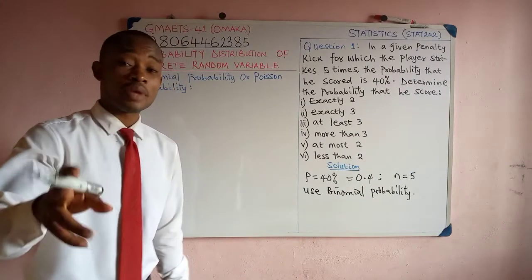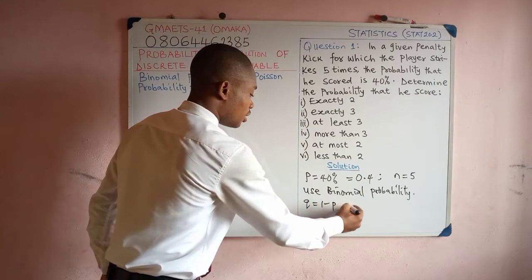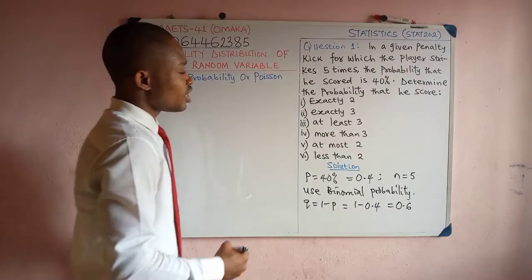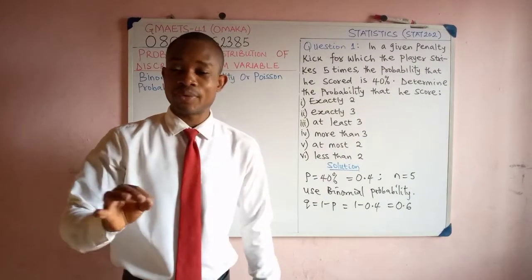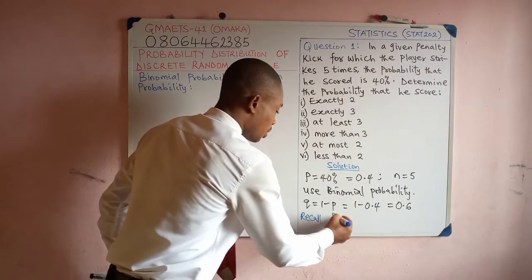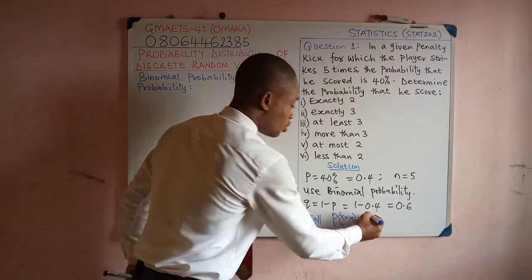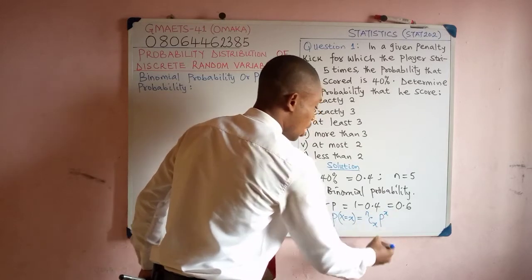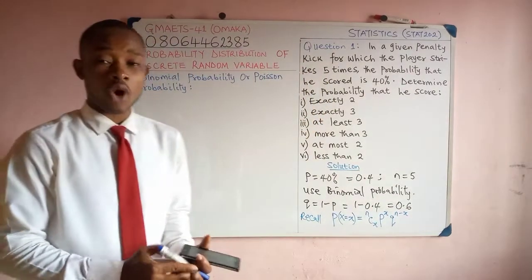Since we are using binomial probability, we need to determine the probability of failure. Q is equal to 1 minus P, so that would be 1 minus 0.4, giving us 0.6. Now we have the probability of success P and the probability of failure Q. Recall the formula: the probability that a discrete random variable assumes the value X is given by N combination X, times P raised to the power X, times Q raised to the power N minus X.